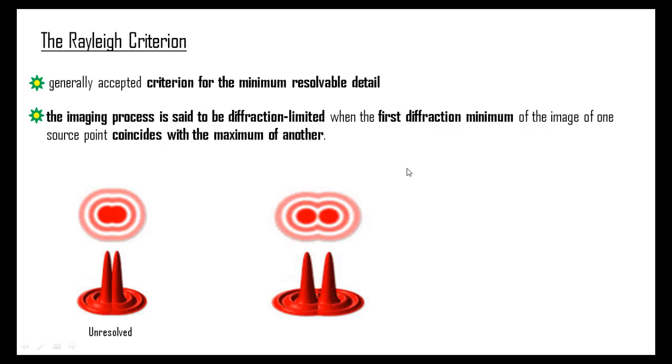If this blurring of the image of the point source is larger than the aberrations produced by the system, the imaging process is said to be diffraction limited and that is the best that can be done with that size of the aperture.